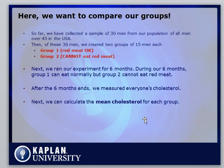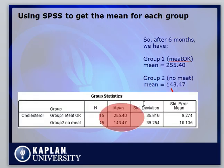Next, we want to compare our groups, because the key question is: will there be a significant difference between them? Group 1 can eat red meat and group 2 cannot. So at the end of six months, is there going to be a significant difference between their mean cholesterol levels? The parameter we're comparing is mean cholesterol. Using SPSS, group 1 had a mean of 255.4 and group 2 had a mean of 143.47.